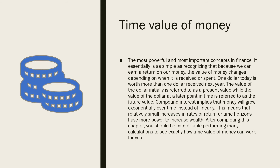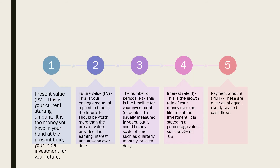Present value is your current starting amount. It is the money you have in your hand at the present time — your initial investment for the future. When we say future value, this is the ending amount at a point in time in the future. It should be worth more than the present value, provided it is earning interest and growing over time. When we say the number of periods, this is the timeline of your investment or debt. It is usually measured in years, but it could be any scale of time such as quarterly, monthly, or even daily.